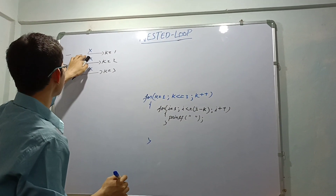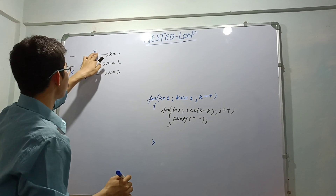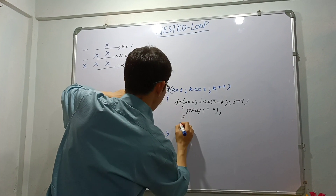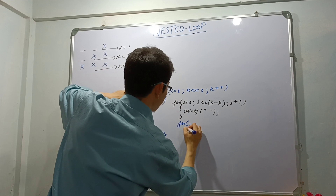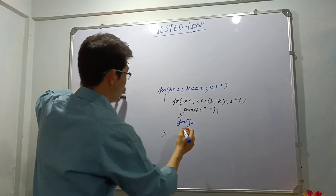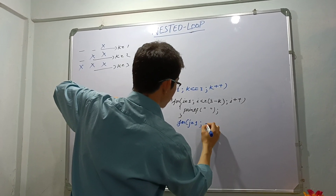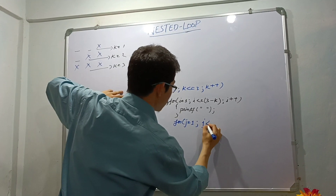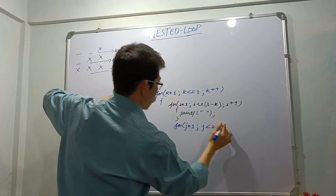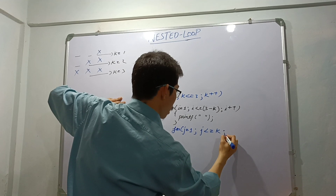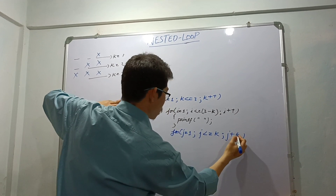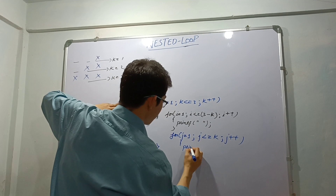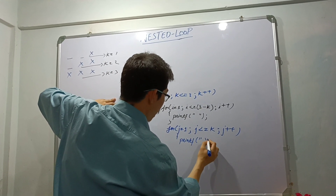Now after printing the spaces, I have to print x. For that I will again use a for loop with j. For x I'm using j: j equals to 1, and j should print one time, then two times, then three times — so less than equals to k. Let us check whether it is working or not. Printf x.